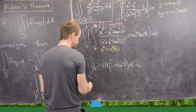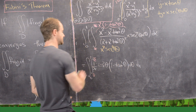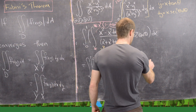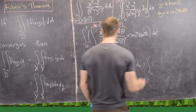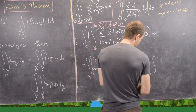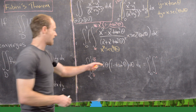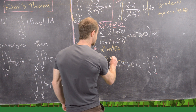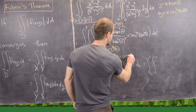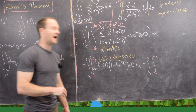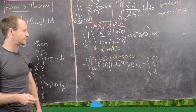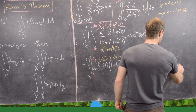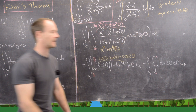Multiplying this out, we can distribute cos²θ through (1 − tan²θ) to get cos²θ − sin²θ, which equals cos(2θ) by a trig identity. So the integrand becomes (1/x) · cos(2θ) dθ dx.